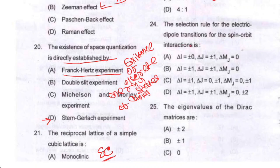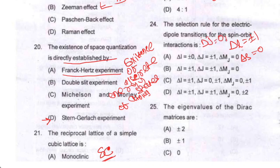Question number twenty-four: the selection rules for electric dipole transitions for spin-orbit interaction are: ΔL = ±1, ΔS = 0, ΔJ = 0 or ±1, and ΔmL = 0 or ±1. So option C is your correct option.